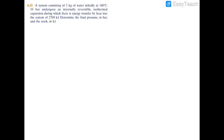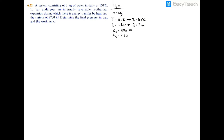We have a system containing two kilograms of water initially at 160 degrees Celsius and 10 bar of pressure. It's going to undergo an internally reversible isothermal expansion process, and we have heat transfer coming into the system of 2700 kilojoules. We're asked to find the final pressure in bar as well as the work of the process from state 1 to state 2.